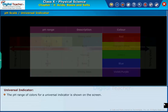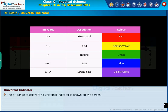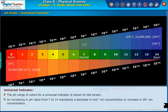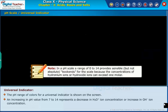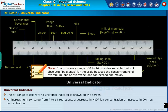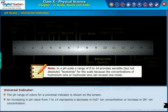The pH range of colors for a universal indicator is shown on the screen. An increase in pH value from 7 to 14 represents a decrease in H3O+ ion concentration, or an increase in OH- ion concentration. Note: on the pH scale, a range of 0 to 14 provides sensible but not absolute bookends for the scale, because the concentrations of hydronium ions or hydroxide ions can exceed 1 molar.